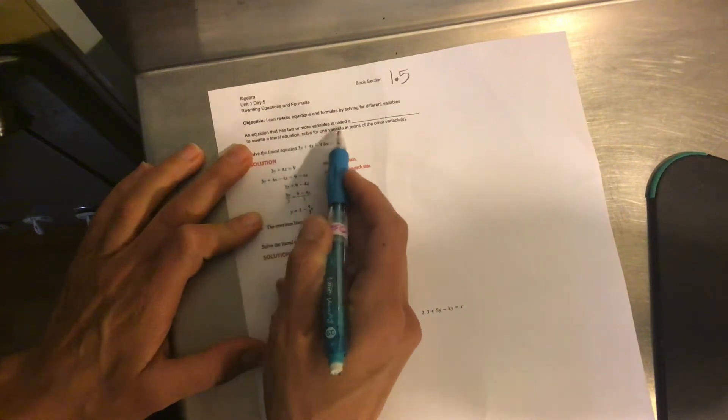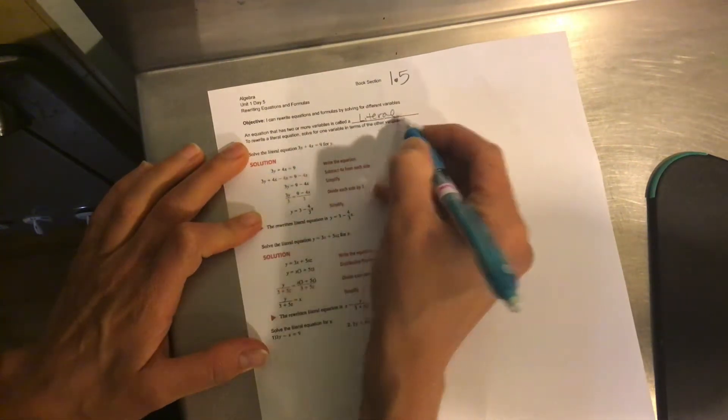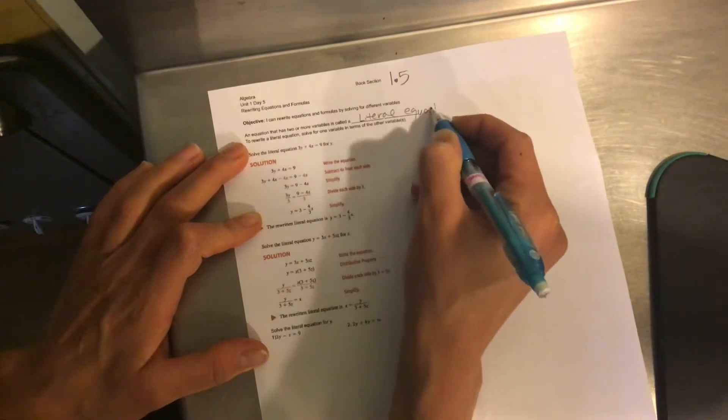An equation that has two or more variables is called a literal equation.